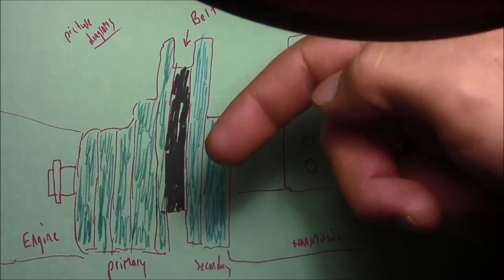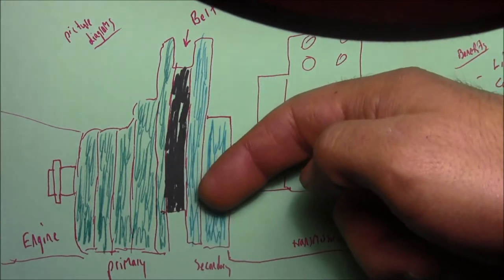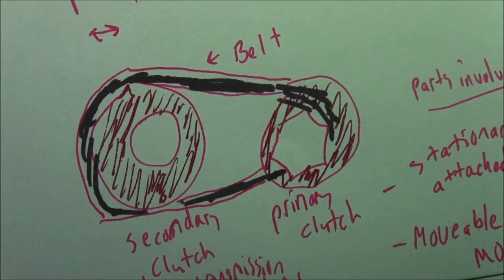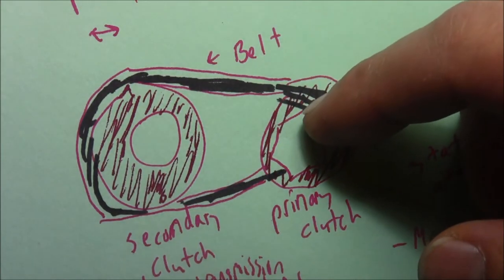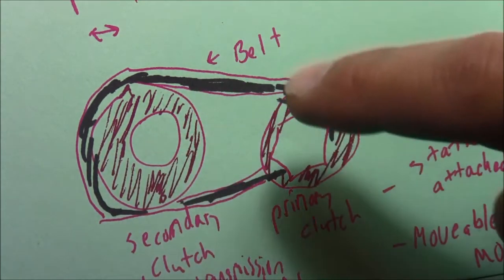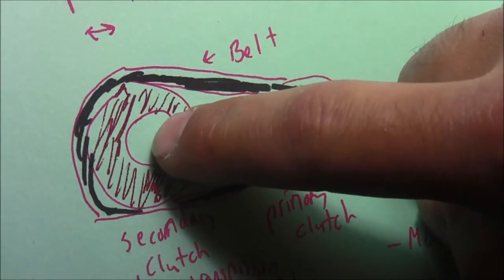Here's the belt and then a secondary clutch which is hooked to your transmission. Now that was a side view. Here is another view of the belt and your primary clutch and your secondary clutch.